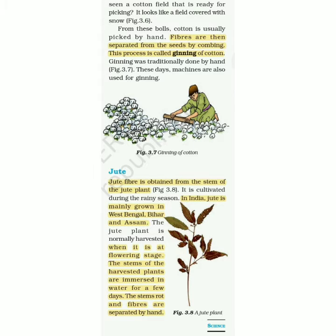Now, jute. Jute fiber is obtained from the stem of the jute plant. Do you know what jute is called? In Hindi it is called pattsan, and in Gujarati it is called shon. The gunny bags used for wheat — which we call kantaan — are made from jute.